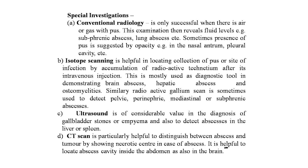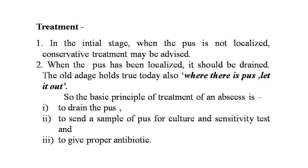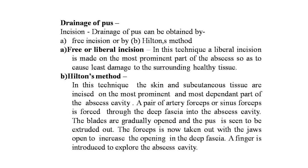Treatment of abscess: in the initial stage when pus is not localized, conservative treatment may be advised. When pus is localized, it should be drained — the old adage holds: where there is pus, let it out. The basic principle is to drain the pus, send a sample for culture and sensitivity to identify the organism, and give appropriate antibiotics. Drainage: by free or liberal incision, the incision is made on the most prominent part of the abscess to cause least damage to surrounding healthy tissue.